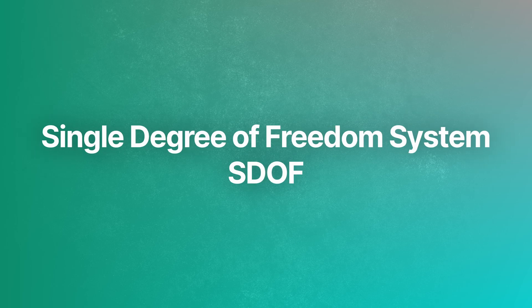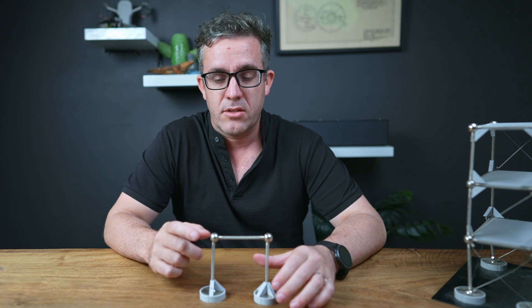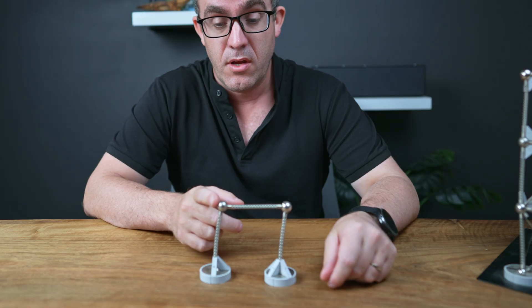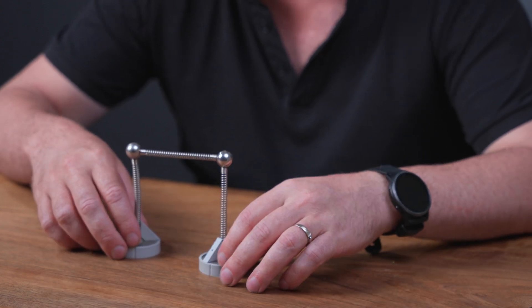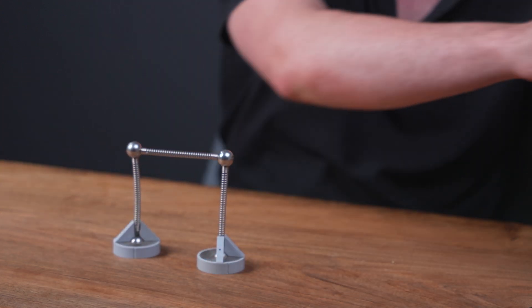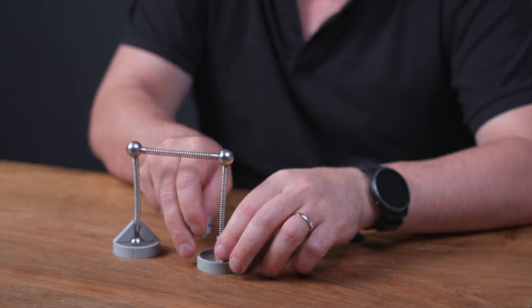So let's start with the single degree of freedom system. As you can see here, it's got a beam, it's got a column, it can move and deflect. If we don't constrain it properly, it can lead to incorrect results. We need to make sure that we have enough constraint in the system such that it can stand up and not fall over.